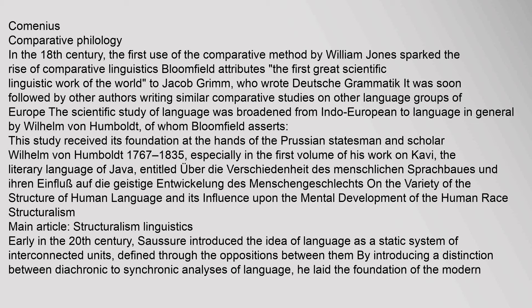In the 18th century, the first use of the comparative method by William Jones sparked the rise of comparative linguistics. Bloomfield attributes the first great scientific linguistic work to Jacob Grimm, who wrote Deutsche Grammatik. The scientific study of language was broadened from Indo-European to language in general by Wilhelm von Humboldt, especially in the first volume of his work on Kavi, entitled Über die Verschiedenheit des menschlichen Sprachbaues und ihren Einfluss auf die geistige Entwicklung des Menschengeschlechtes — on the variety of the structure of human language and its influence upon the mental development of the human race.